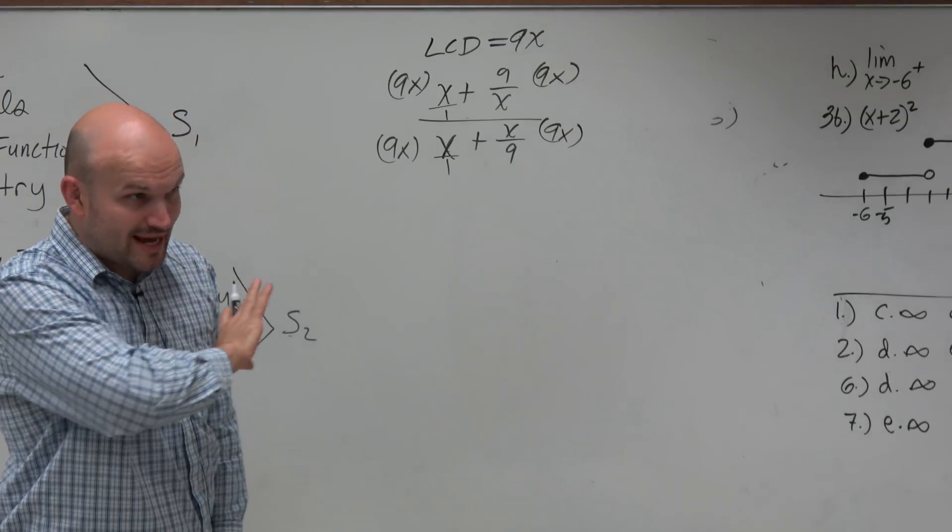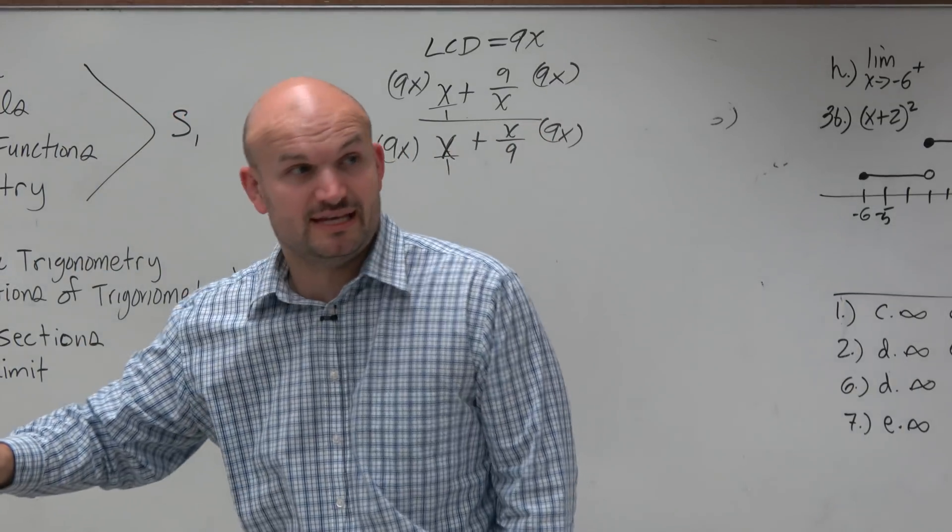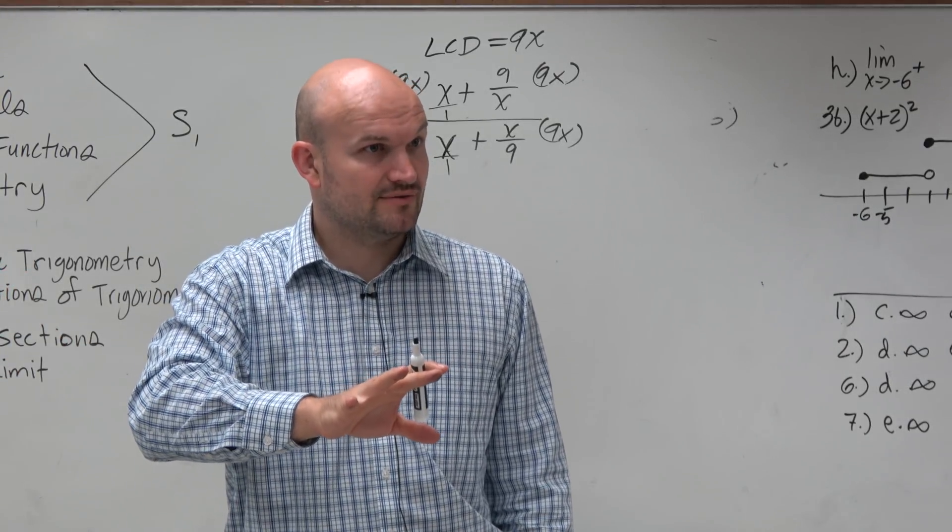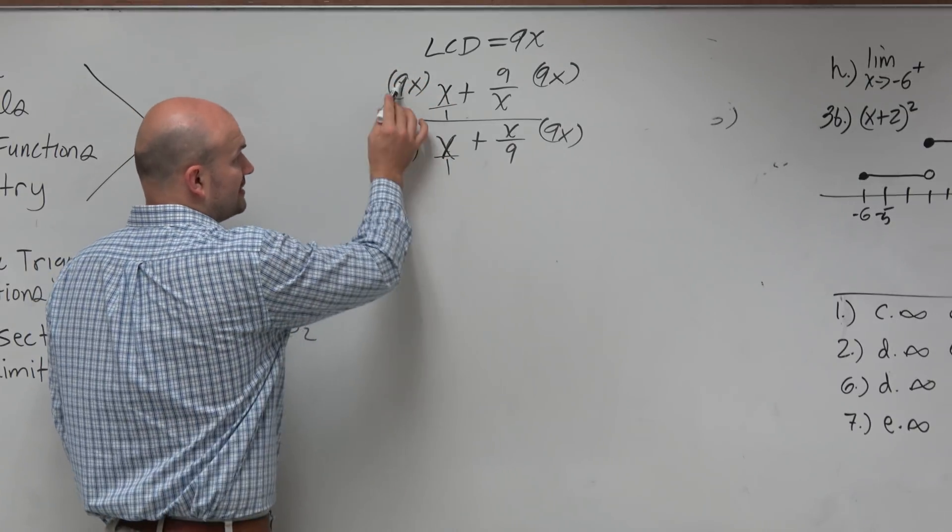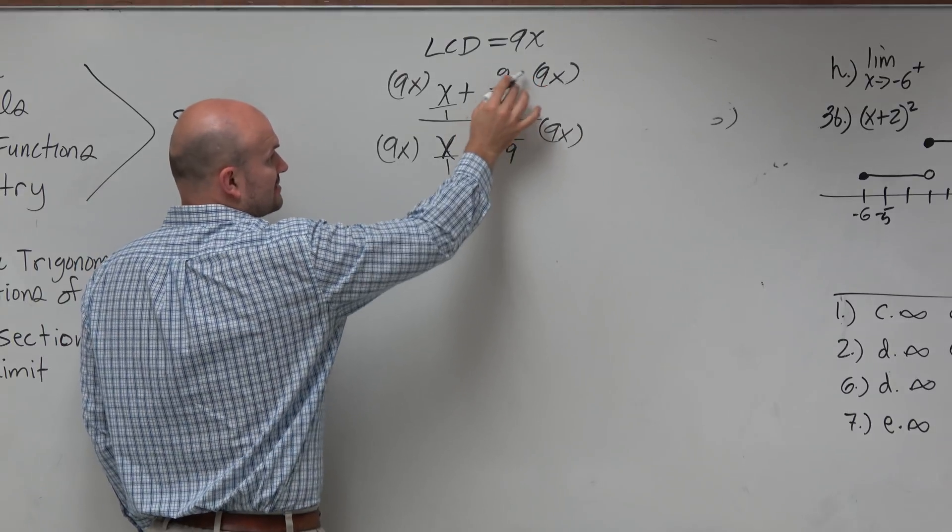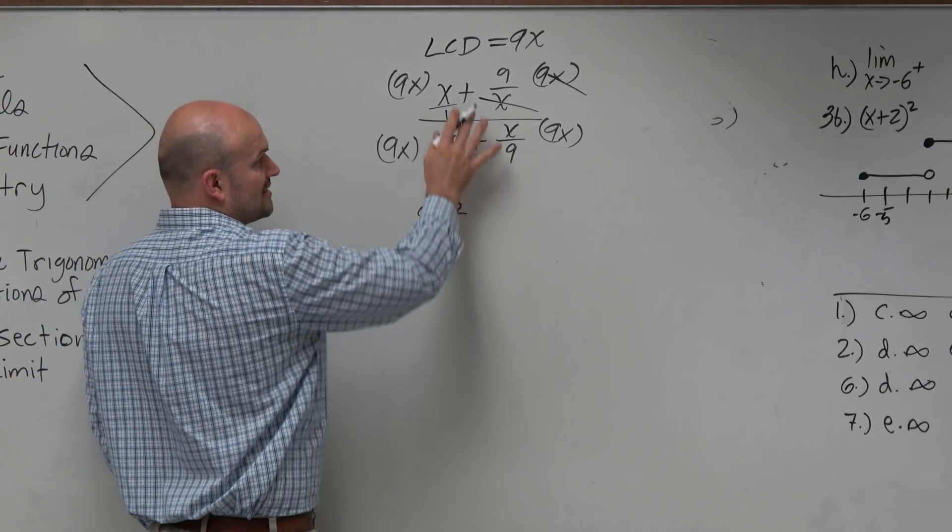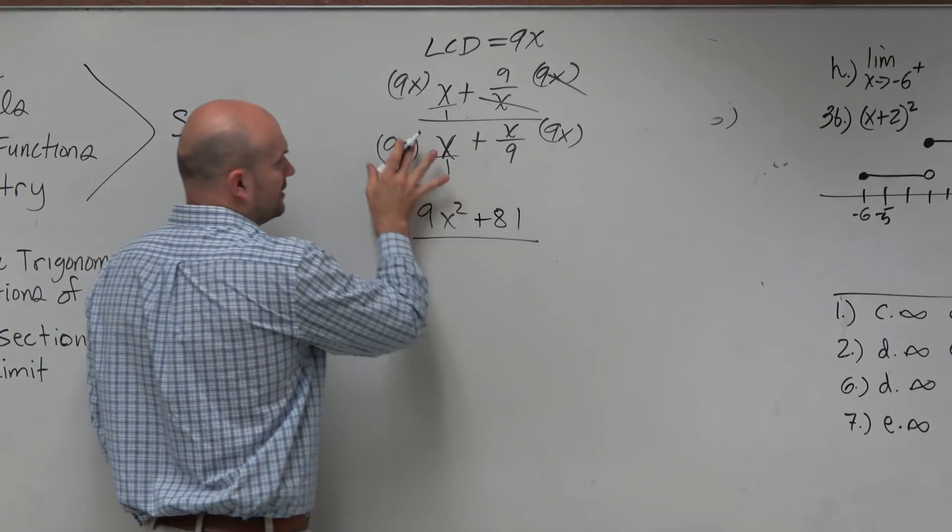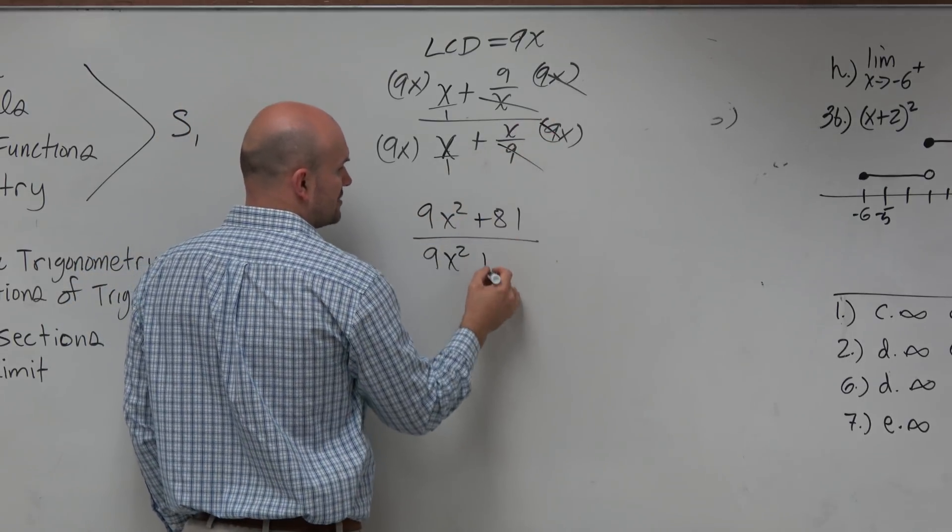And what happens when you multiply everything times 9x, and again, hopefully you guys agree, as long as we're treating everything equally, I'm not changing the value of the fraction, right? Everything is being multiplied by the same value. So the fraction is still intact. Well, what happens here, 9x times x, well, that's 9x squared. 9x times 9 over x, well, now the x's divide out. So I'm just left with 9 times 9, which is 81. Here I get a 9x squared. And now the 9's divide out, so I'm left with an x squared.